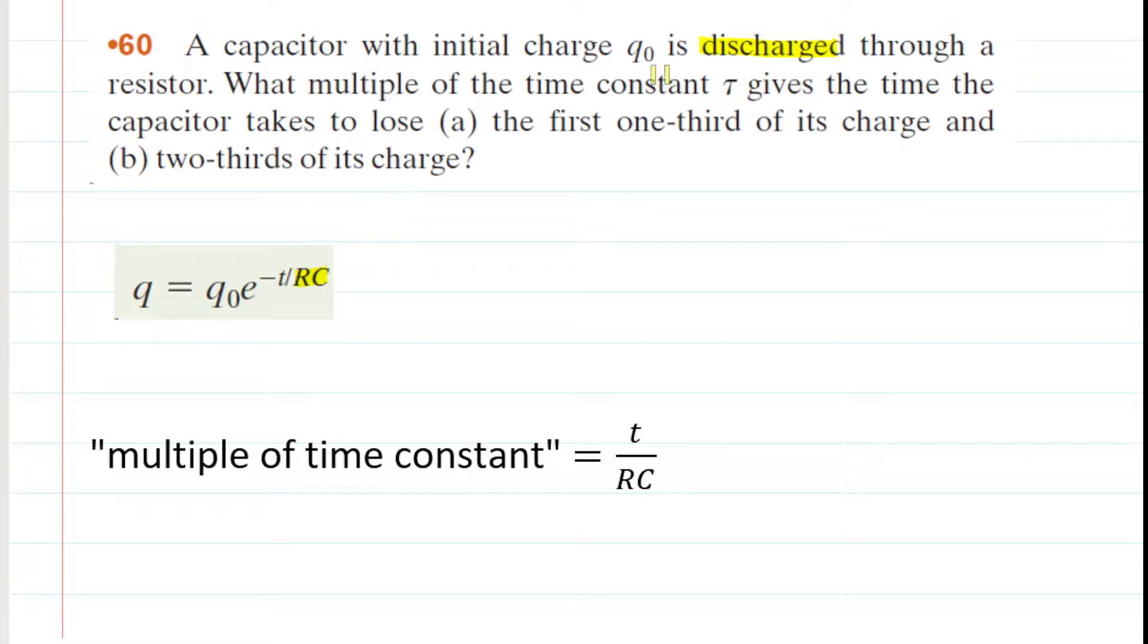RC is what's known as the time constant. It is sometimes symbolized by the Greek letter tau. When the question says the multiple of the time constant, they would like to know the fraction of t divided by the time constant.